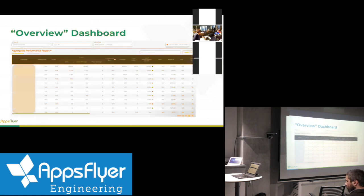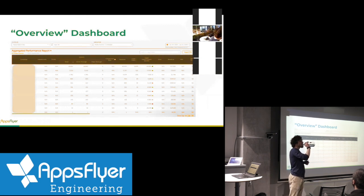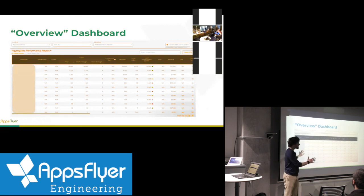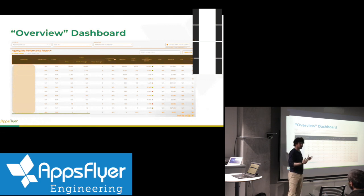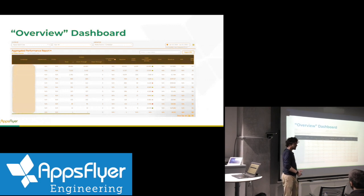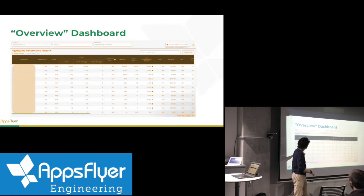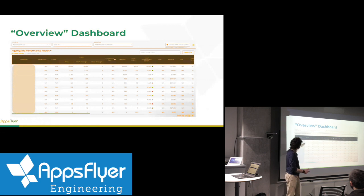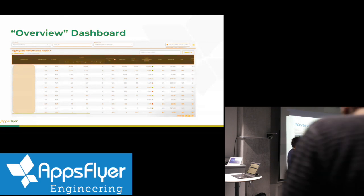This is our overview dashboard — this is right where all the clients start. What you can get from this dashboard is, for any media source that you want to look at, you can see a breakdown of the client's data split by their campaigns. I've covered over their campaigns here so you can't figure out who the client is. But you get to see all the metrics for each campaign broken down by media source. You also have choices of other breakdowns, but for this talk I'm going to focus on media source and campaign.